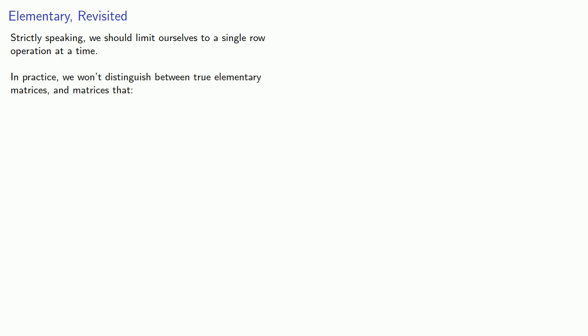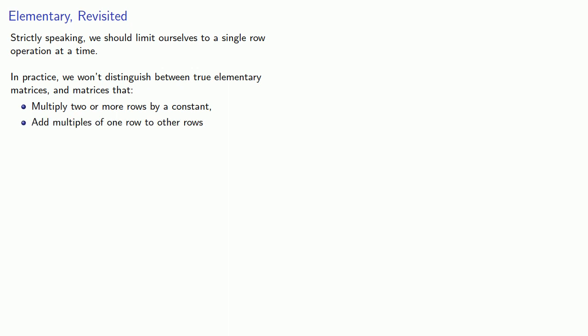Strictly speaking, we should limit ourselves to a single row operation at a time. In practice, we won't distinguish between true elementary matrices and matrices that either multiply two or more rows by a constant or add multiples of one row to other rows. However, to retain at least a vestige of the idea that these are elementary-ish matrices, we won't combine both of these into a single matrix — we won't do both sets of row operations at the same time.